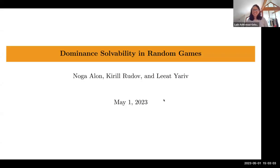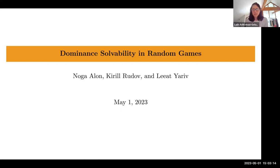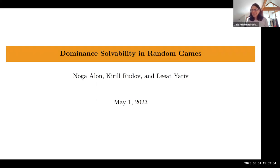Welcome everybody. We're happy and proud to have with us today Liat Periv from the Department of Economics at Princeton University. She's been researching very varied topics from repeated games to experimental economics via matching and social networks. She has editorial positions in too many journals to number, and today she's going to tell us about dominance solvability in random games.